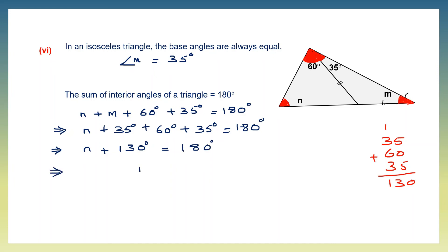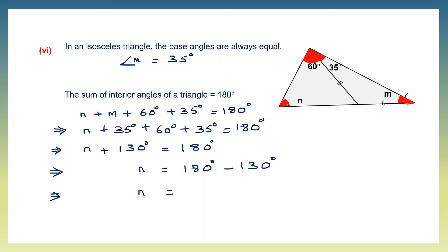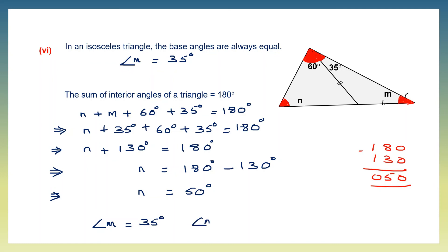Therefore n equals 180 minus 130, which is 50 degrees. So the value of m is 35 degrees and the value of angle n is 50 degrees. We have found both answers.